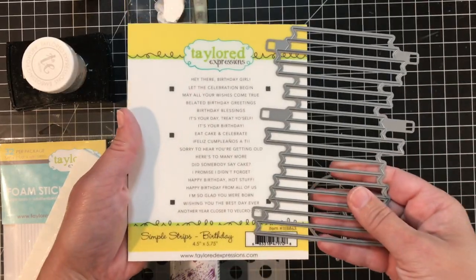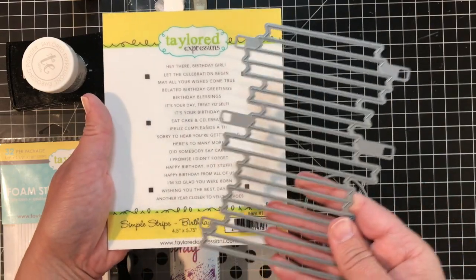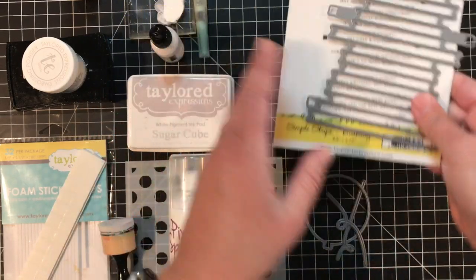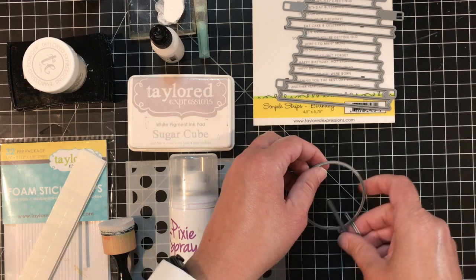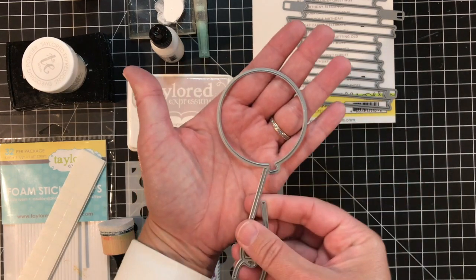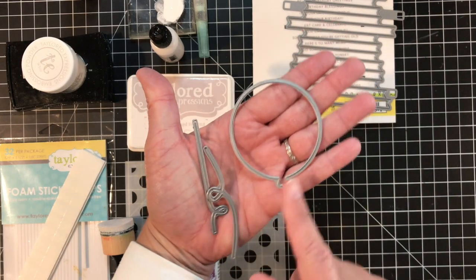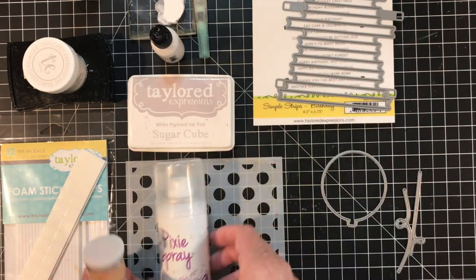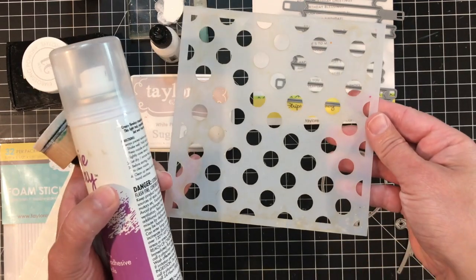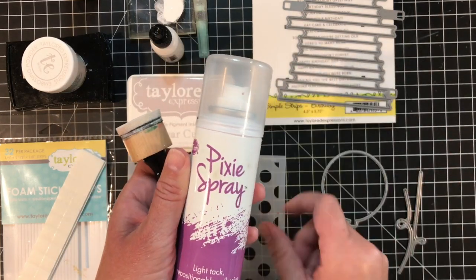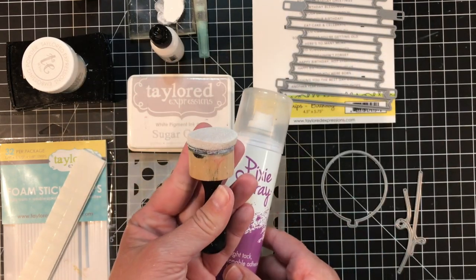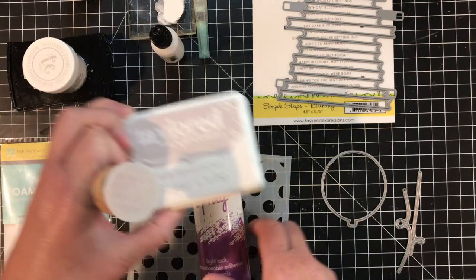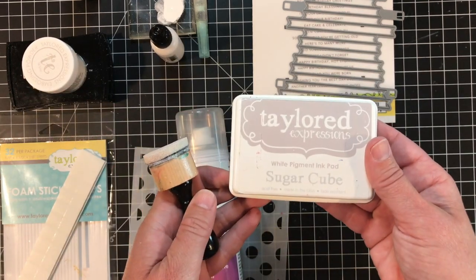Let's take a look at the supplies I used. I'm using the Simple Strips birthday stamp along with the Simple Strips die. I'm using the Main Balloon Shape from the Celebrate Big Balloon Shaker die along with a couple of the dies from the Balloon Strings die collection. I'm using the Polka Party Stencil and along with that I have my Pixie Spray and my Ink Blending tool. I'll be blending ink with Sugar Cube ink and so I like to use the blending tool for that.